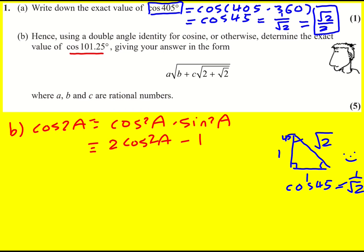We're interested in finding cos 101.25°, but notice if we double 2 times 101.25°, we get 202.5°, and if we double that, then I get 405°. So you can see how we're going to be using that now.